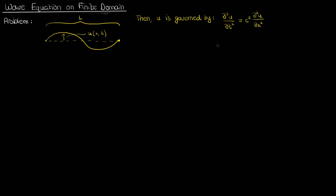Note that c here is a real number that represents what the speed of this wave would be if it were allowed to move in an infinite domain. Now since the wave here is confined to a finite string, c has a different meaning here altogether, which we'll discuss later. Let's say that this finite string is fixed at each end: u equals 0 at one end and u equals 0 at the other end.